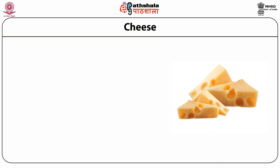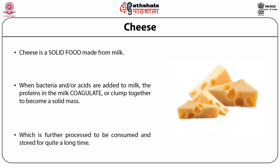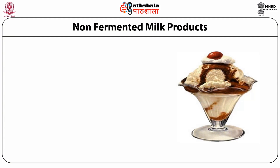The last fermented milk product is cheese. Cheese is made by addition of bacteria and/or acids, which produces acid in the milk that coagulates the milk protein. This coagulated mass is further processed to be consumed and stored for a long time. We will learn about cheese in our further modules in detail.